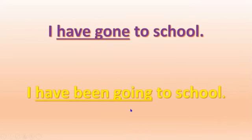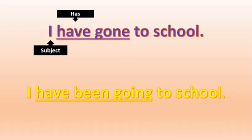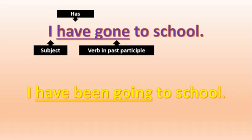Now let's look at the structure. For present perfect simple, the structure is: subject + auxiliary 'have' or 'has' — 'have' for first person, 'has' for third person — then the verb in past participle, and the complement. That is the present perfect simple structure.